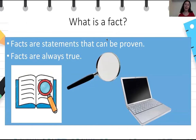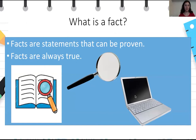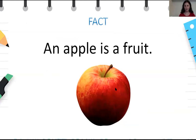What is a fact? Facts are statements that can be proven and they're always true. They can be proven by finding information in books or on the internet and so on. Here is an example of a fact: an apple is a fruit. Now this is a fact because it is always true.